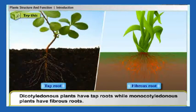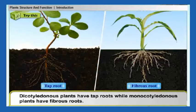Dicotyledonous plants have tap roots, while monocotyledonous plants have fibrous roots.